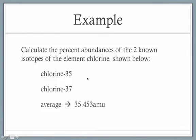So I think at this stage, we're ready to tackle a first example. Here's how it's going to be worded: Your job is to calculate the percent abundances of the two known isotopes of the element chlorine shown below. Now these names themselves provide you with some of the information you need—we have the isotope chlorine-35 and the isotope chlorine-37.